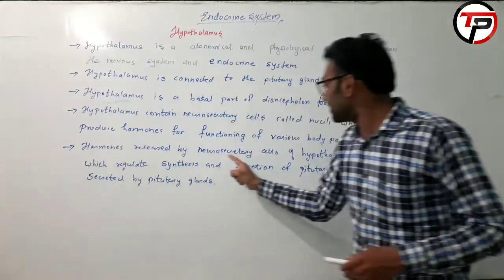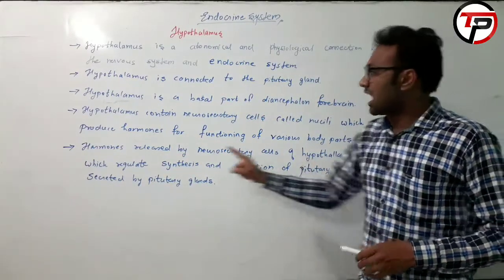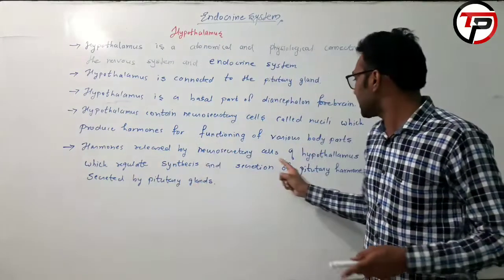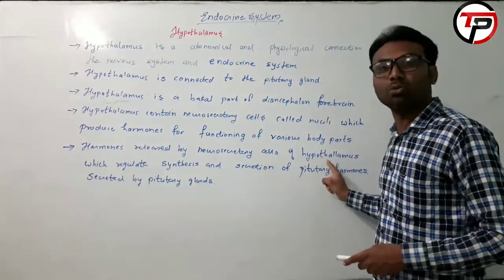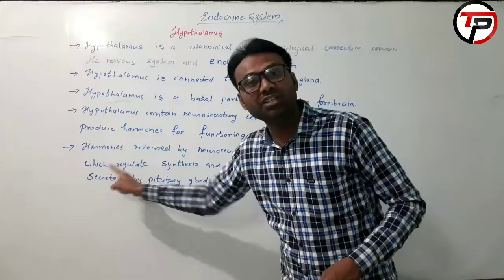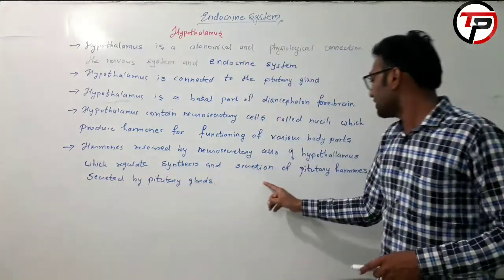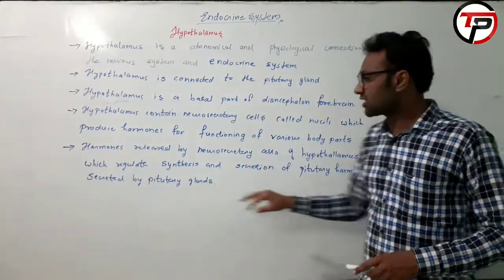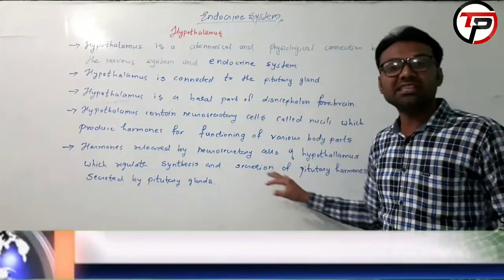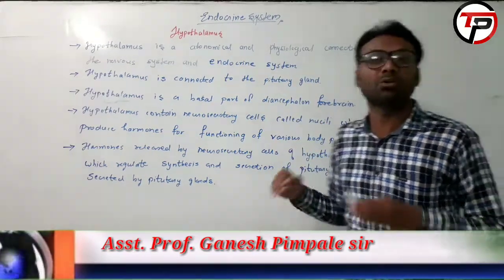Neurosecretory cells send signal impulses from the hypothalamus which regulate the synthesis and secretion of the pituitary gland — that is, they control the synthesis and secretion of pituitary hormones.